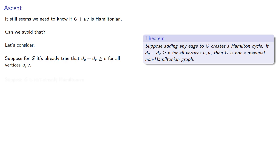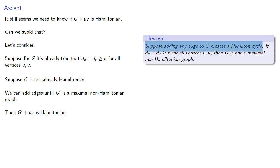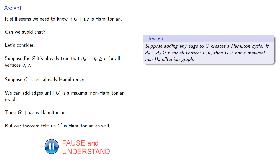And suppose G is not already Hamiltonian. We can add edges until G is a maximal non-Hamiltonian graph, and then when we add the next edge, we get a Hamiltonian graph. But that means that we can use our theorem, which will tell us that G is Hamiltonian as well, which is a contradiction. So our original graph must be Hamiltonian.